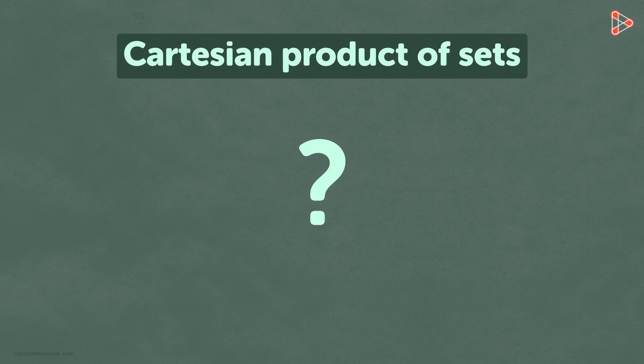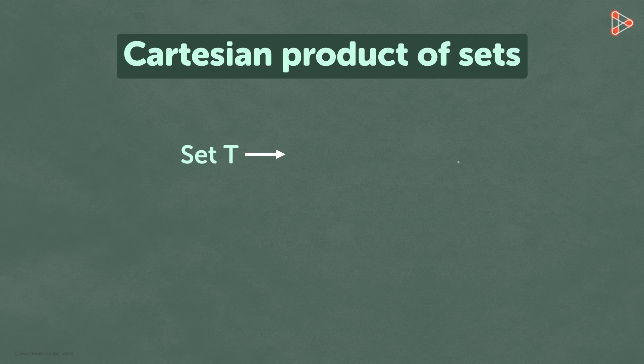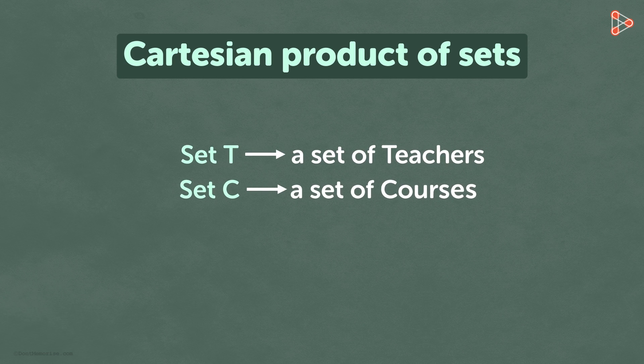What is the Cartesian product of sets? Let's understand this using an example of two sets. We have two sets with us. The first set T represents a set of teachers. The second set C represents a set of courses taught.